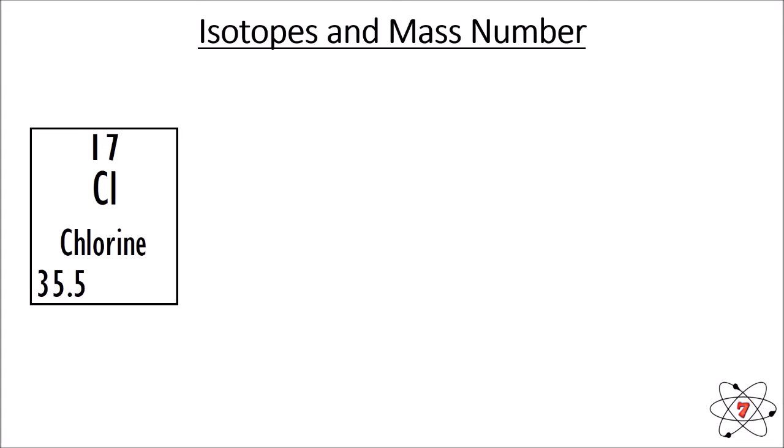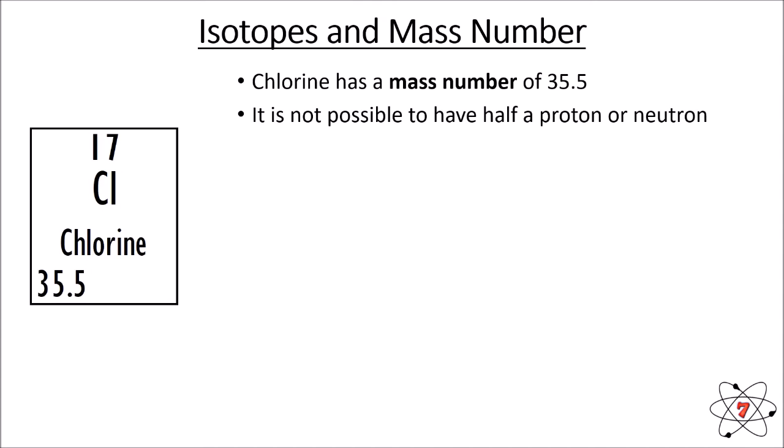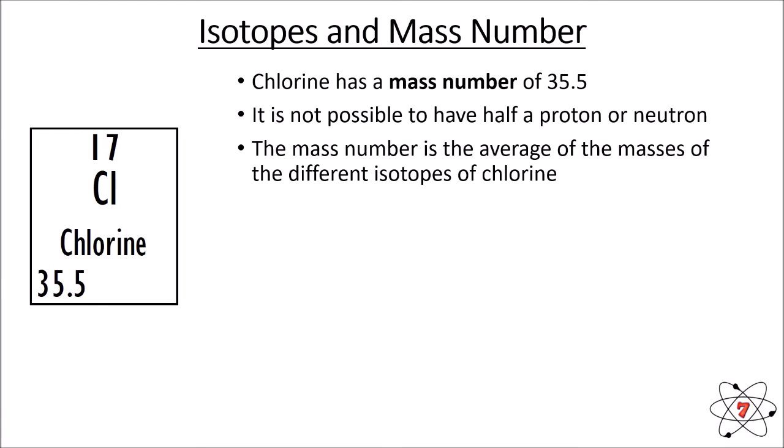Isotopes affect the mass number we see in the periodic table. If we look at the example of chlorine, it has a mass number of 35.5, which might seem a little odd. We know it's not possible to have half a proton or half a neutron, so how can chlorine have a mass number of 35.5? The reasoning is that the mass number is the average of the masses of the different isotopes of chlorine.